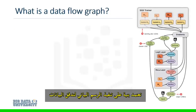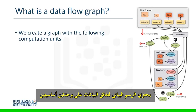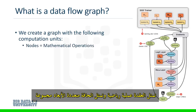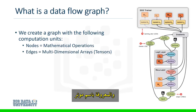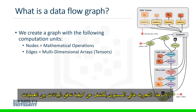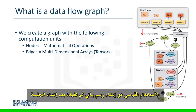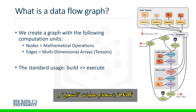TensorFlow's structure is based on the execution of a data flow graph. A data flow graph has two basic units: a node represents a mathematical operation, and an edge represents a multidimensional array, known as a tensor. This high-level abstraction reveals how the data flows between operations. The standard usage is to build a graph and then execute after the session is created, by using the run and eval operations.